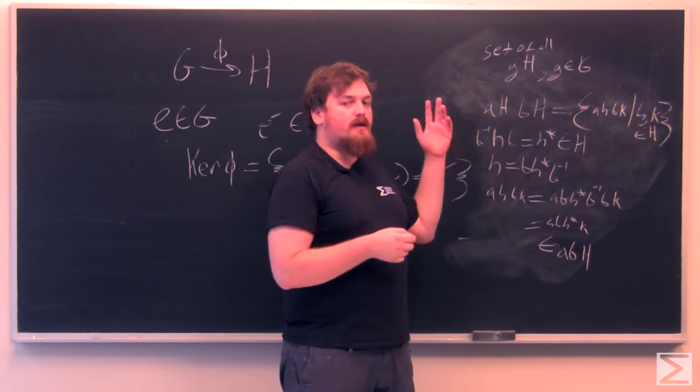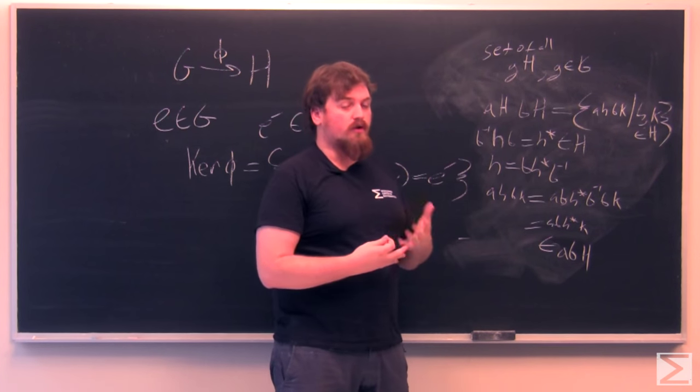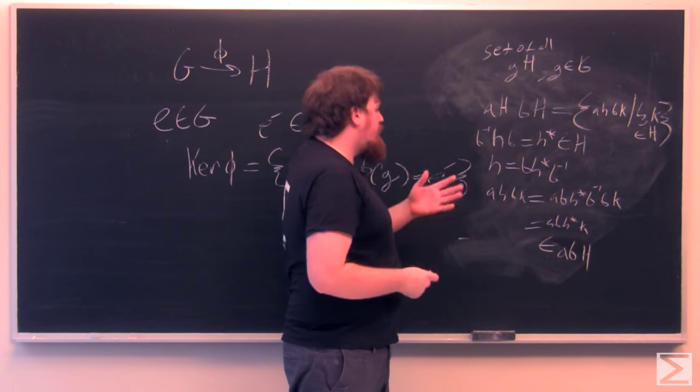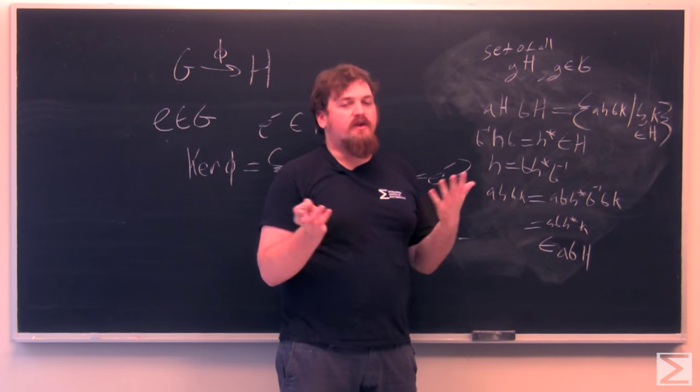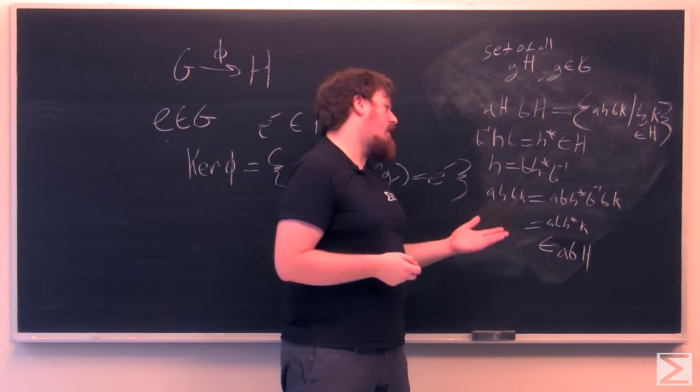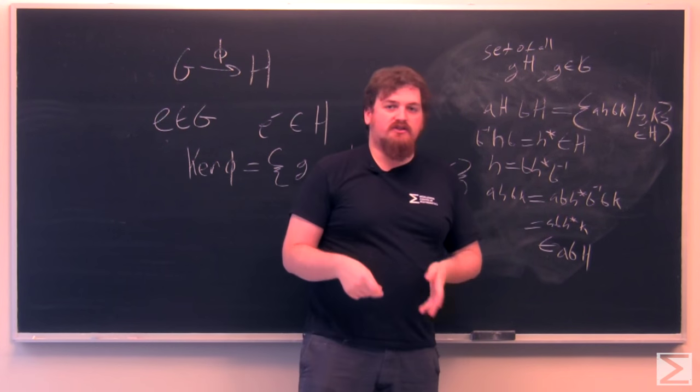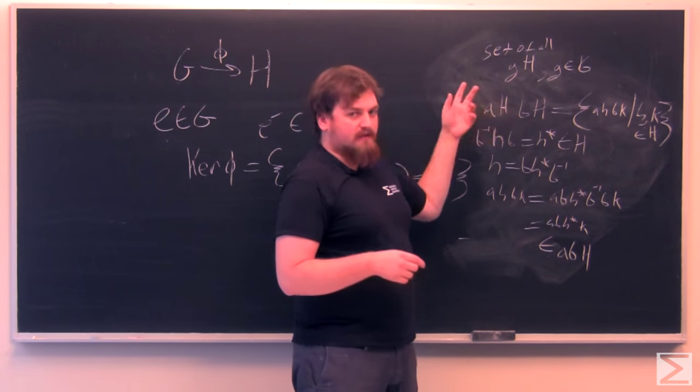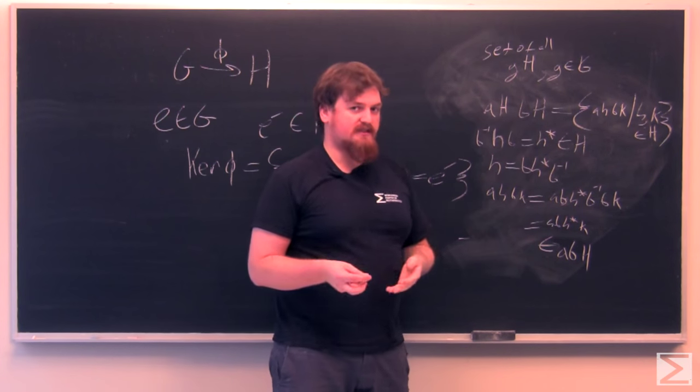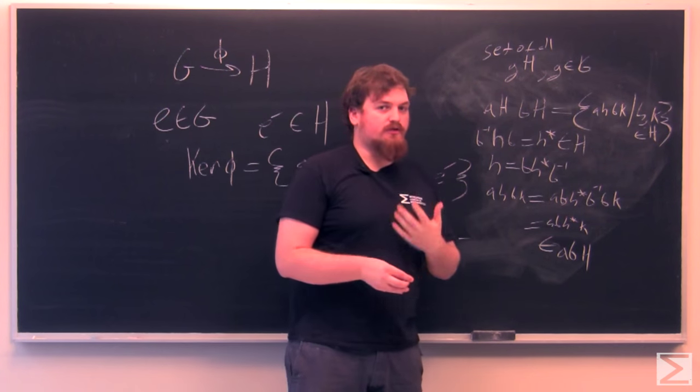If the subgroup H weren't normal, then this process would fail for some A and B, and you'd get an element that was outside of the coset ABH, and the whole thing falls apart. But since we're working with normal subgroups, the set of all left cosets, which are the same as right cosets in the normal subgroup, becomes a group.